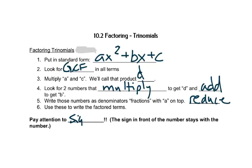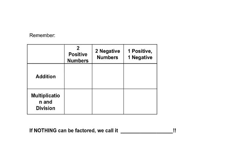We need to pay very careful attention to the signs. The number that's in front of the number stays with the number. Remember that if you add two positive numbers you get a positive number. If you add two negative numbers you get a negative number. And if you add a positive and a negative, you get the sign of the bigger number.